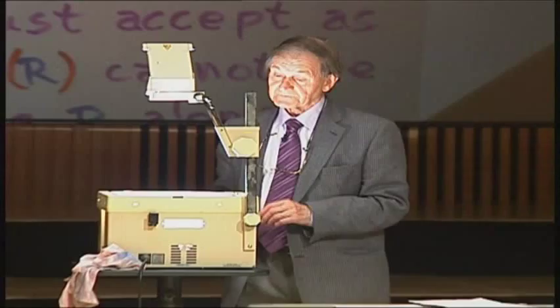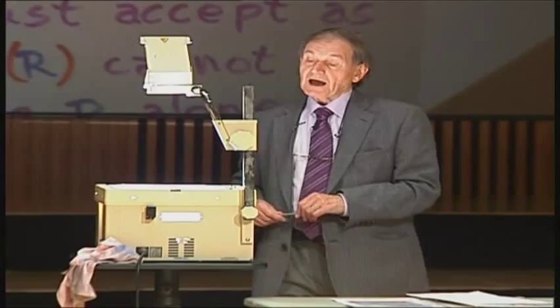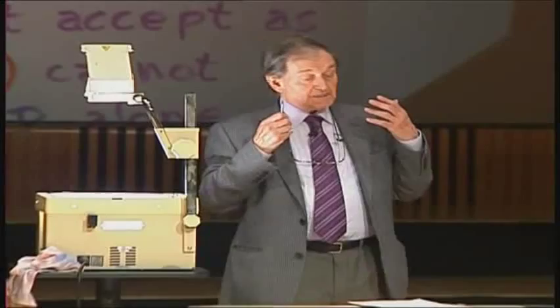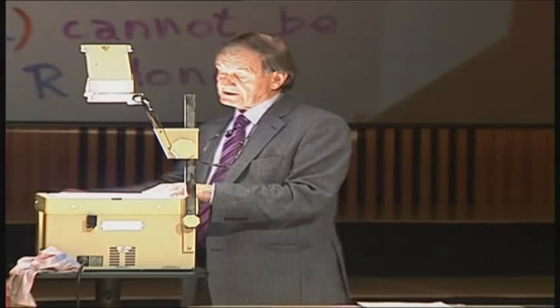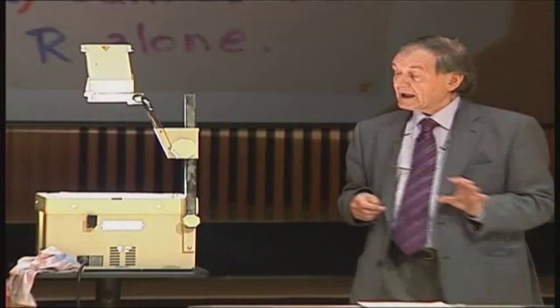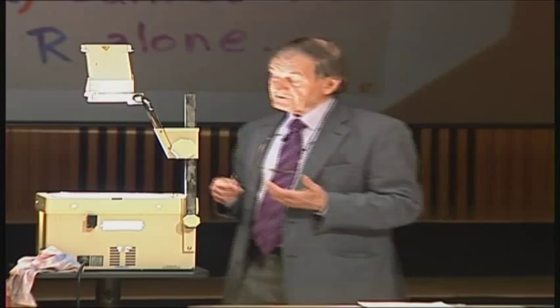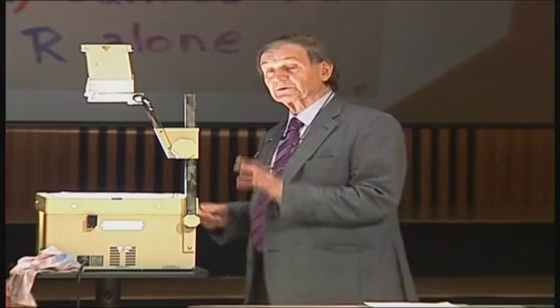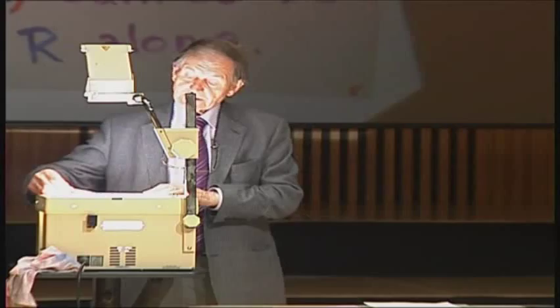Suppose you have some theorem about natural numbers and you want to know if it's true. You might have a method — a system of rules which constitute a proof. The key point is: call these rules R. These rules, whatever they might be, are things that you trust. If you don't trust them, there's no point in regarding the result as a proof. If you had rules which enable you to prove 2 equals 3, that's no good — you want rules that couldn't do that.